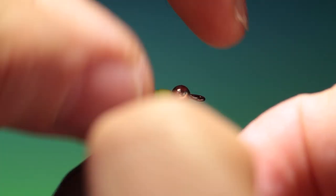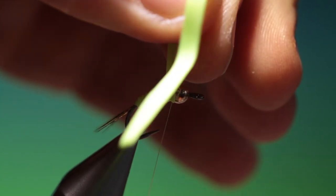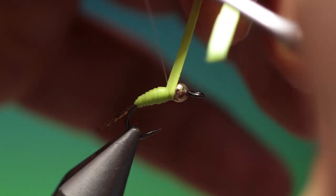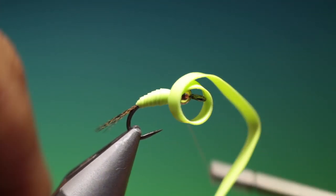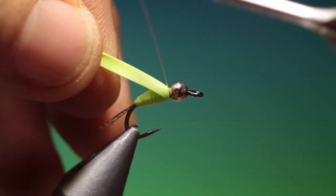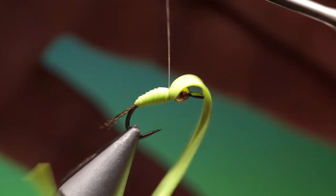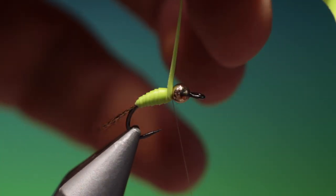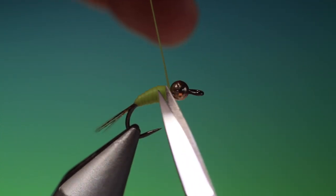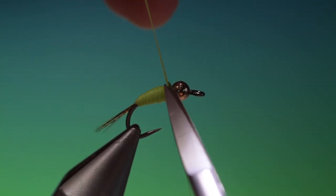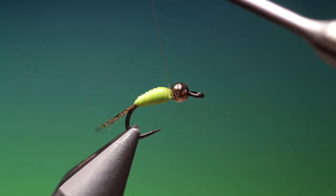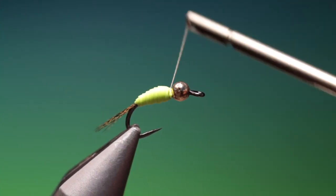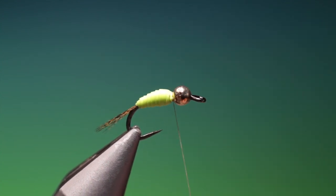There. And another one there. And then we can tie that off. Once that's secure, we can stretch the nymph skin. Trim it off. Secure that nicely there.